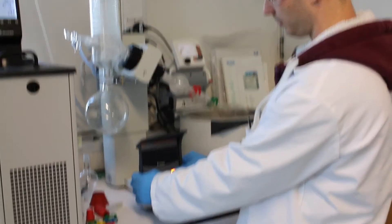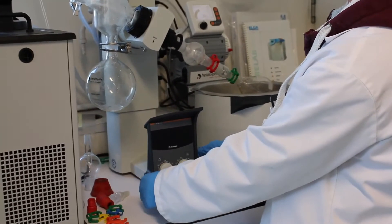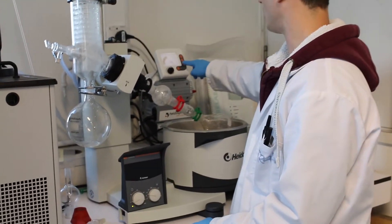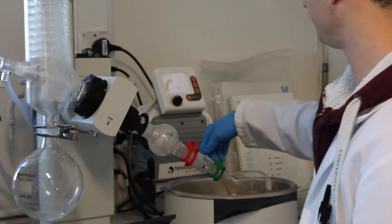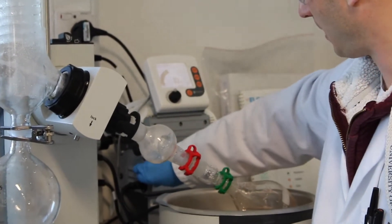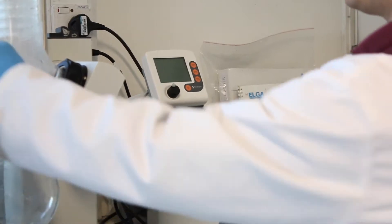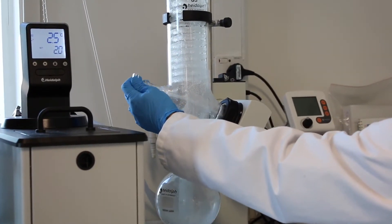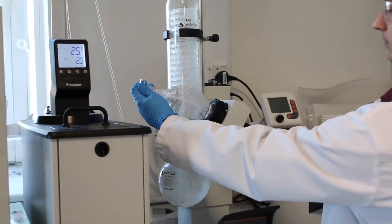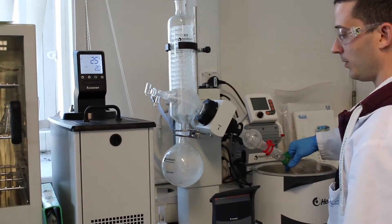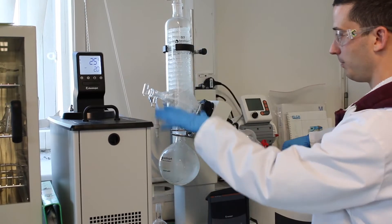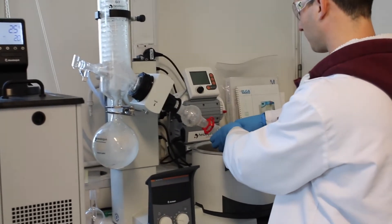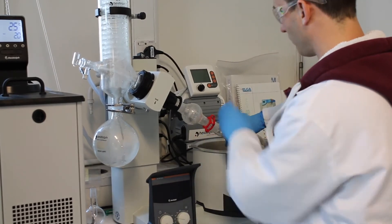Now we can turn off the rotary evaporator. We're going to turn off the pump, the main switch, and now we're going to vent the system. Hold your flask. Wait until pressure is stabilized, and now you can remove your flask carefully.